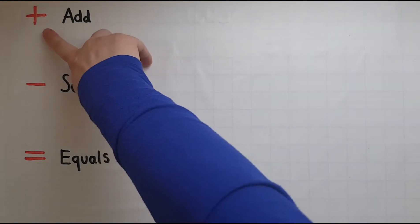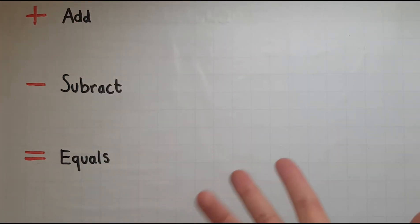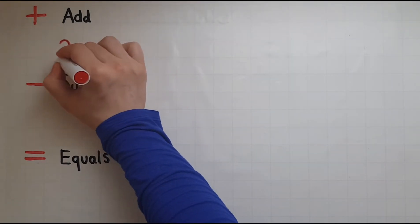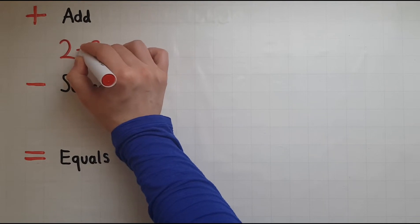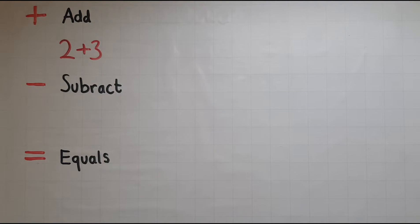So this first symbol, as you can see, means add. So you add in two different amounts. Let's say I've got two add three. So I have two apples and three pears. How many fruit do I have all together?